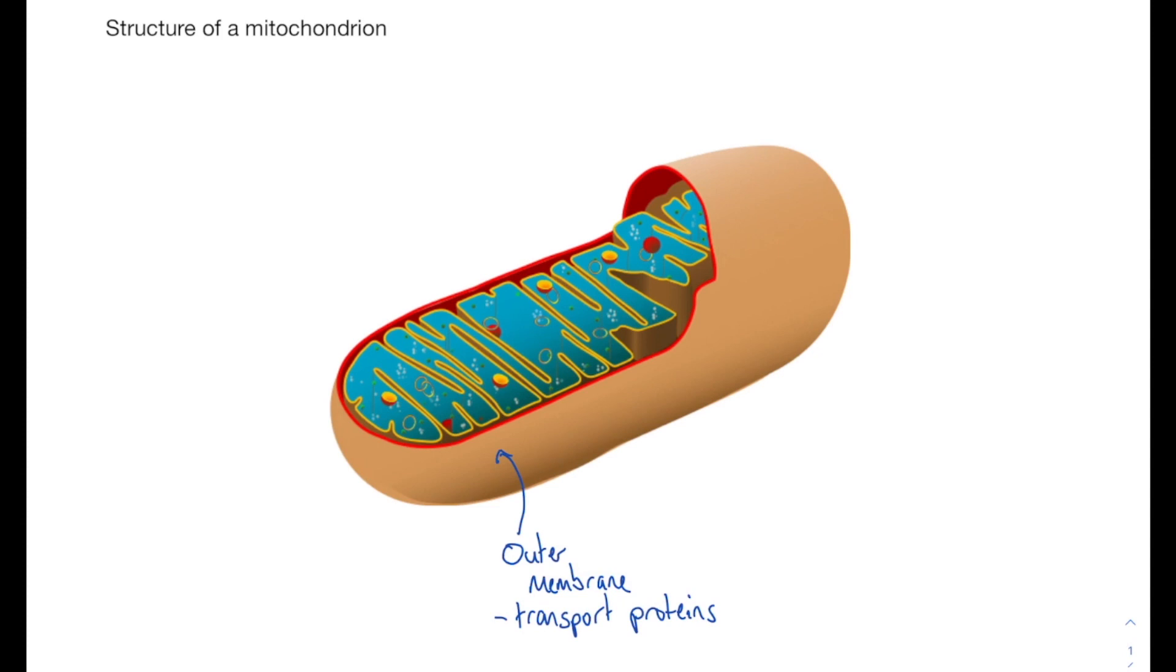In between the outer membrane and the inner membrane we have what is known as the intermembrane space. Remember that mitochondria are double membraned organelles. This means they have two lipid bilayer membranes.